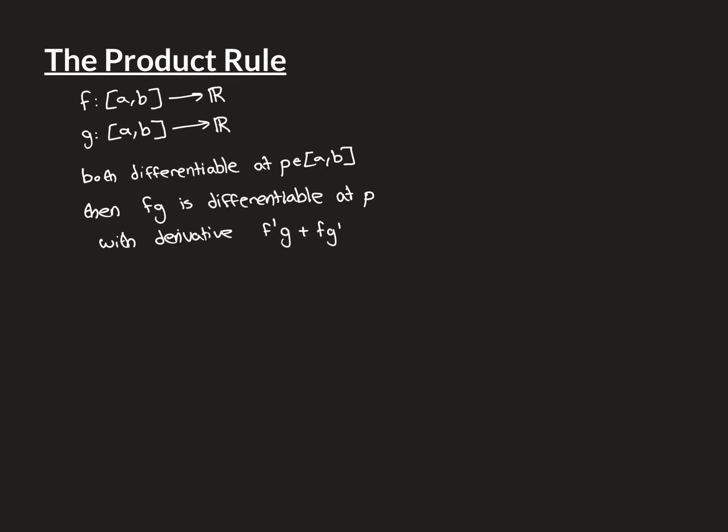In this video we're going to prove the product rule of differentiation, which I'm sure is familiar to you from calculus. Written out in full formality, the product rule says that if you have two functions f and g that are both real-valued functions defined over some subset of the real line, and for simplicity we've taken our subset as the closed interval from a to b,